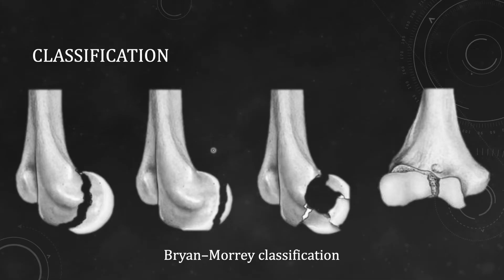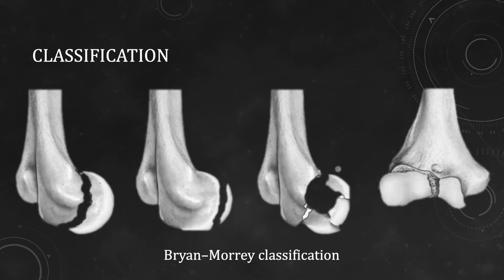Now coming to classification. The most commonly used classification is the Bryan-Morrey classification, but it has some flaws we will discuss. In type 1, there is a simple fracture of the capitulum separated from the lateral condyle. In type 2, there is a small cartilaginous fragment of the capitulum with no subchondral bone attached — very difficult to reconstruct and may need excision. In type 3, the capitulum fracture is comminuted with multiple fragments. In type 4, there is fracture of the capitulum with part of the trochlea attached — a capillotrochlear fragment — while the medial-most part of the trochlea remains attached to the parent bone.